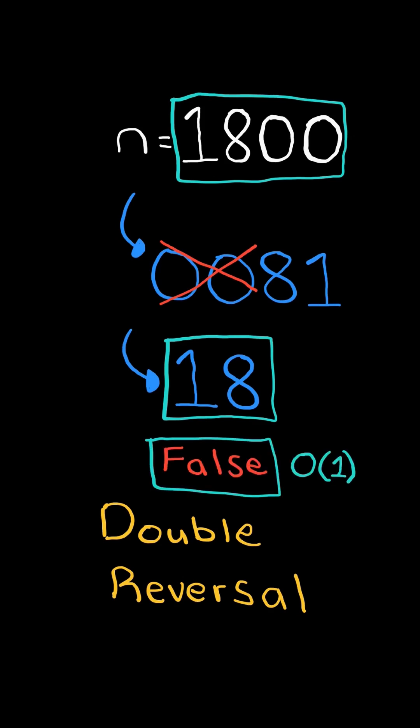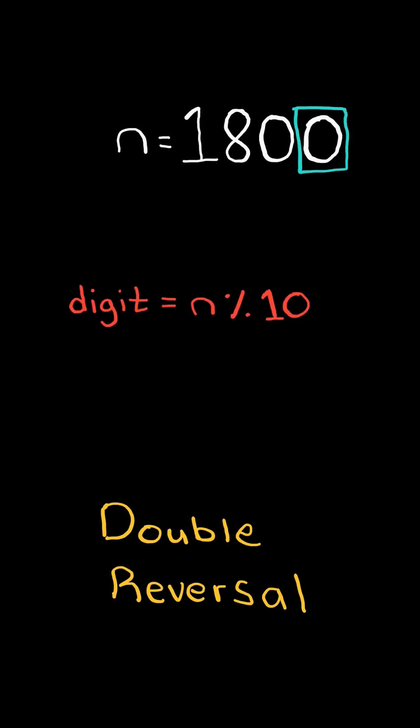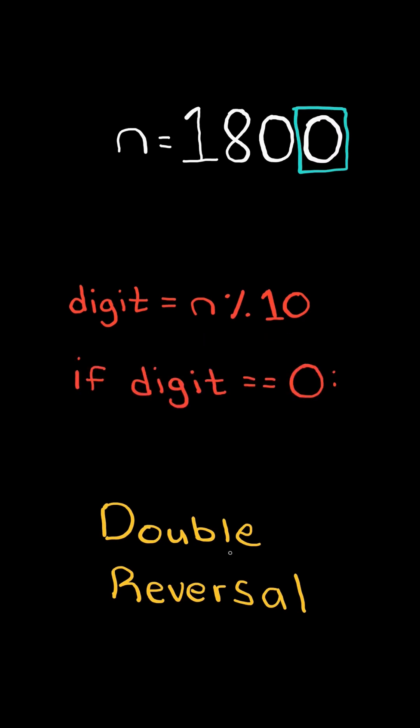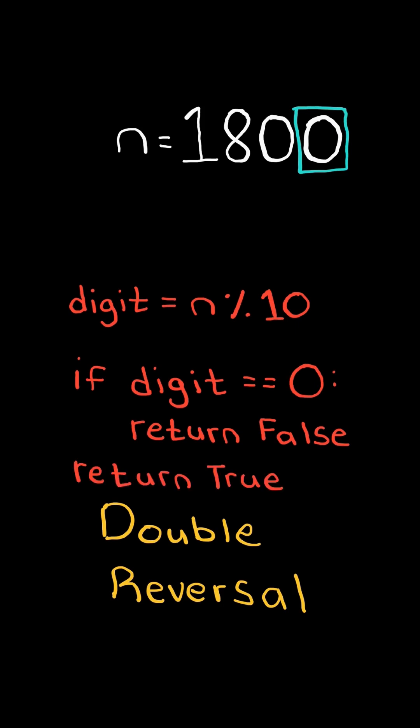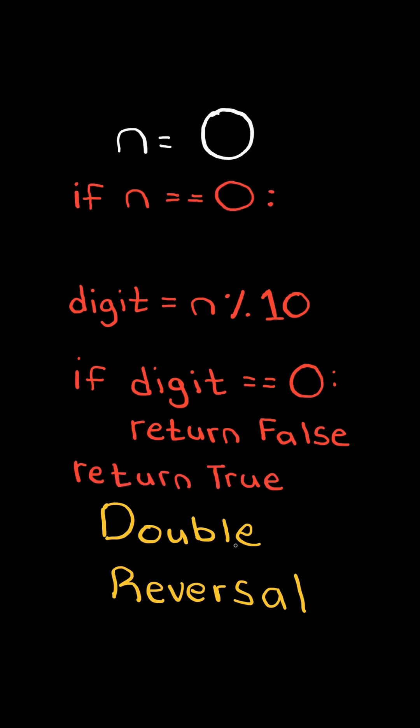We will solve this in O(1) time. First, we get the last digit of n by taking n mod 10. If that digit equals 0, we return false. Otherwise, we return true.